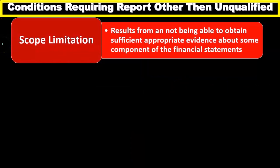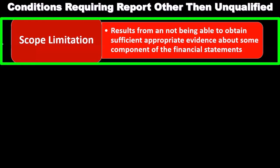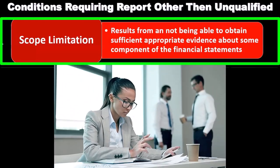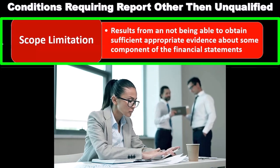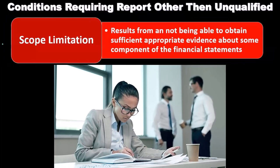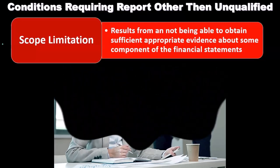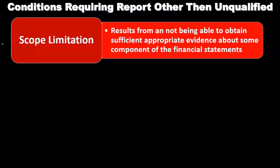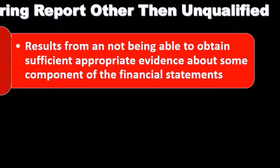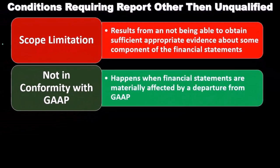A scope limitation is one condition that may cause us to issue a report other than an unqualified standard report. It results from not being able to obtain sufficient, appropriate evidence about some component of the financial statements. For example, if a company has part of its organization in another country and we don't have the resources to audit it — possibly due to regulatory limitations — that's a scope limitation. If it's material to the financial statements, it will cause some kind of qualification within the reporting.